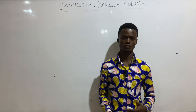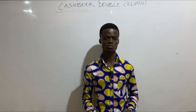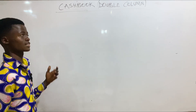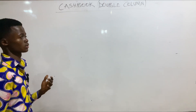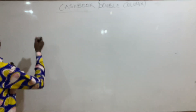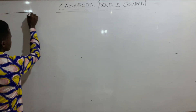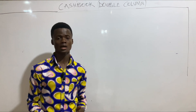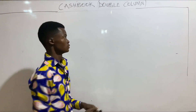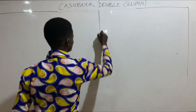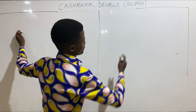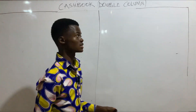So let's quickly look at the format of the double column or the two column cashbook. The double column cashbook, like any other account, has a title of the account and two sides — the debit side and the credit side.